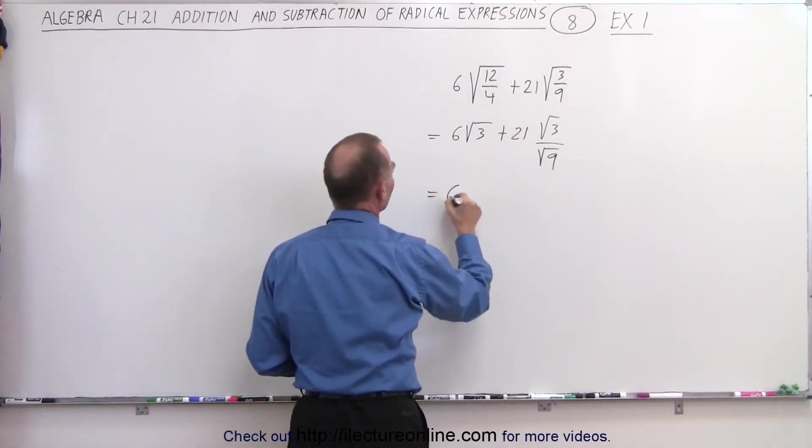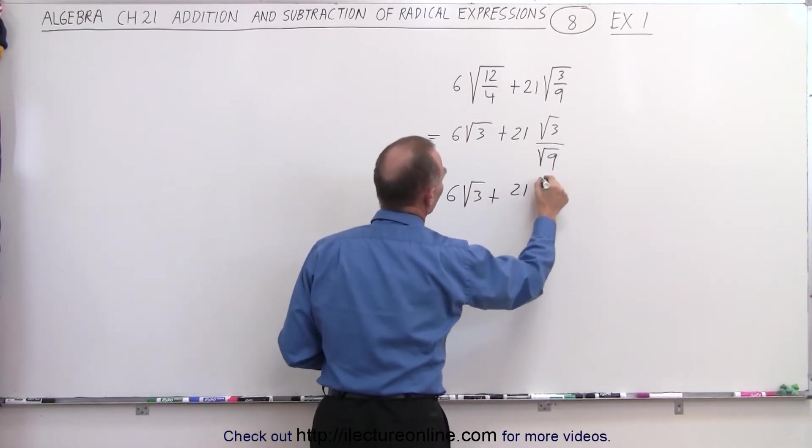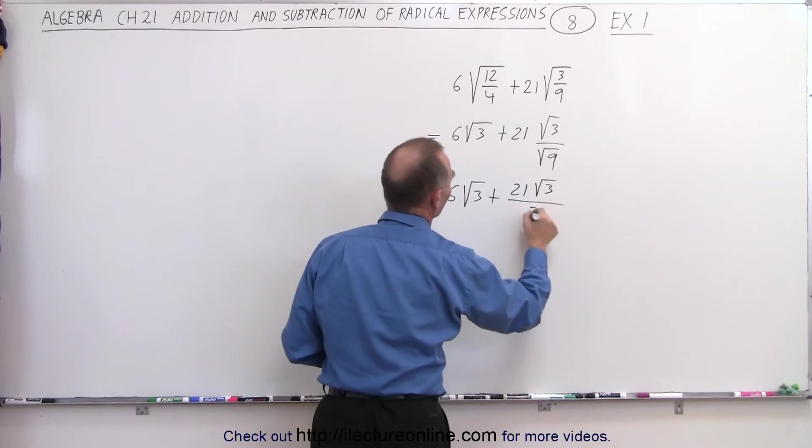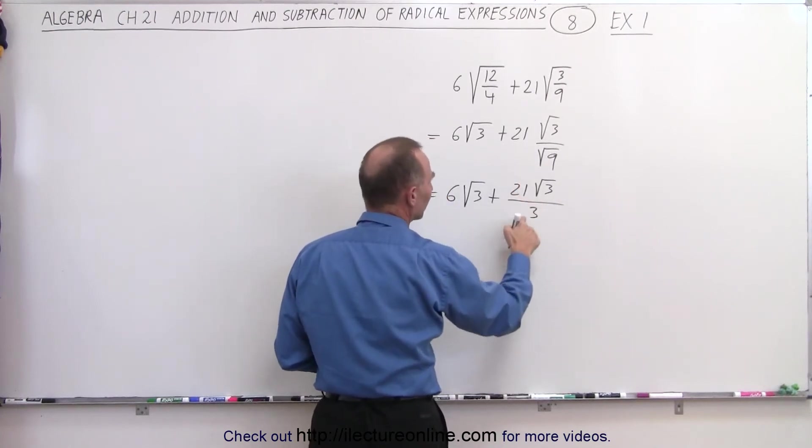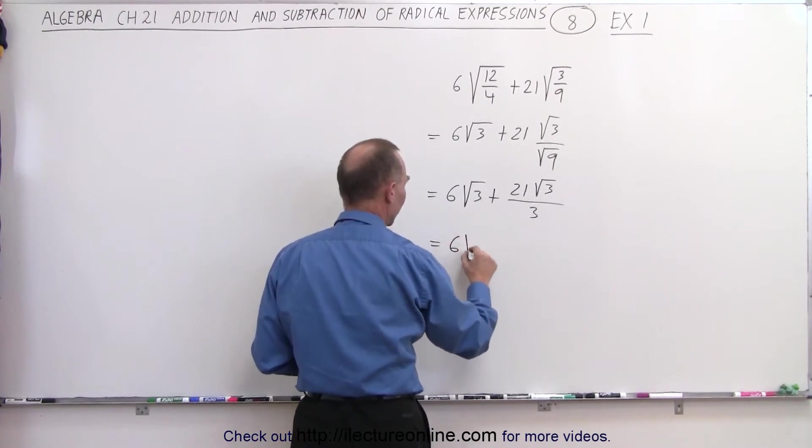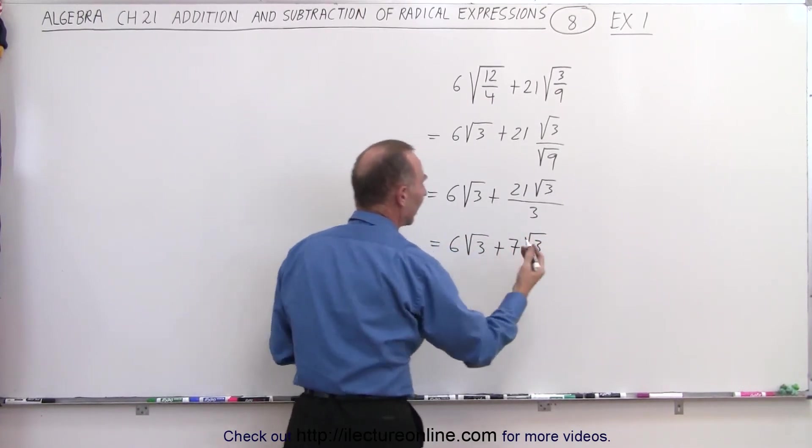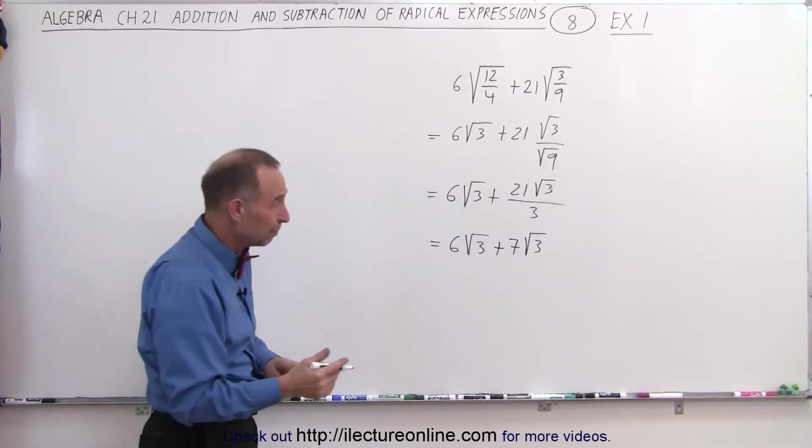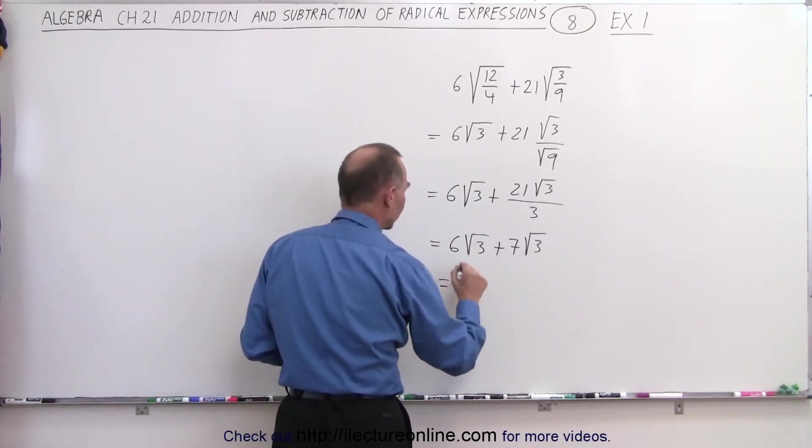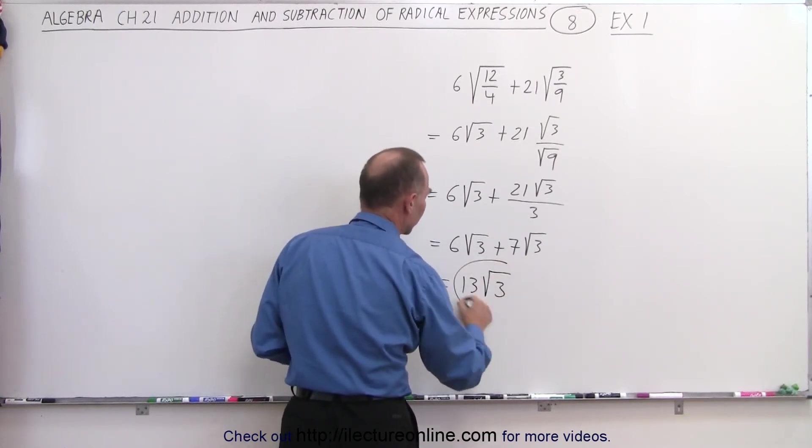So this can be written as 6 times the square root of 3, plus 21 times the square root of 3 divided by 3, because the square root of 9 is 3. And then 21 divided by 3 is simply 7. So this equals 6 times the square root of 3, plus 7 times the square root of 3. And then you realize you can simply add them because the radical portions are the same. So this equals 6 plus 7, or 13 times the square root of 3.